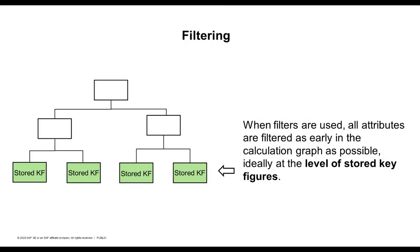When filters are used, all attributes are filtered as early in the calculation graph as possible, ideally at the level of stored key figures. This ensures that data volume is reduced and calculations can be performed on a filtered set of data. This is what Oliver does — he uses filtering to speed up his query.